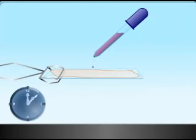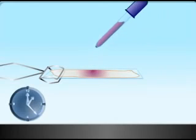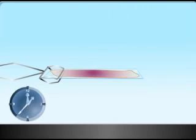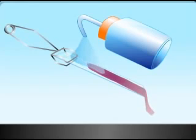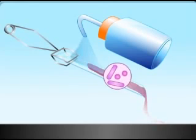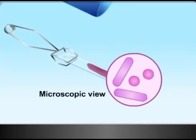The fixed cells are then stained with the basic dye, crystal violet, for 30 to 40 seconds. The slide is then rinsed with water to remove excess stain. At this point, all cells appear purple under the microscope.